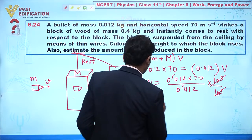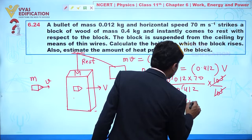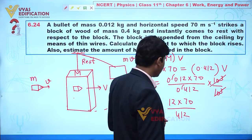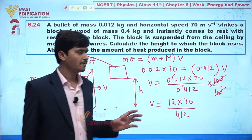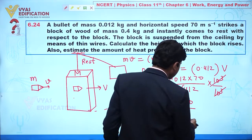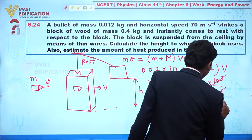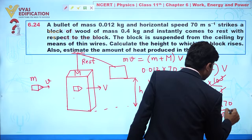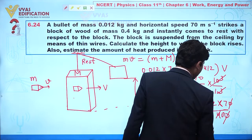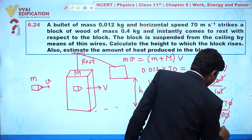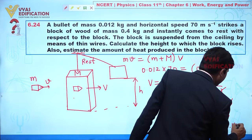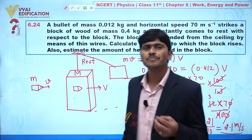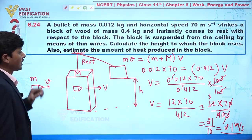We compute v′ = (12 × 70) / 412. Approximating 412 ≈ 400, we get 70/400 × 12, which gives approximately 21/10 = 2.1 m/s. So the combined velocity after collision is approximately 2.1 m/s.